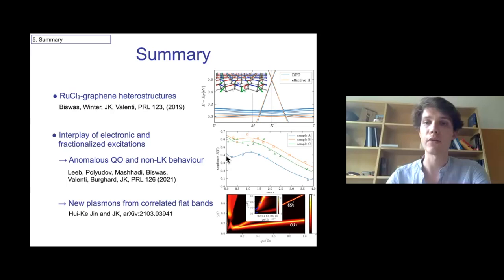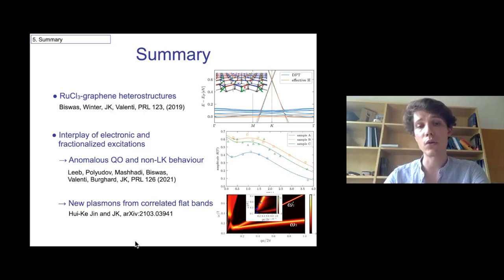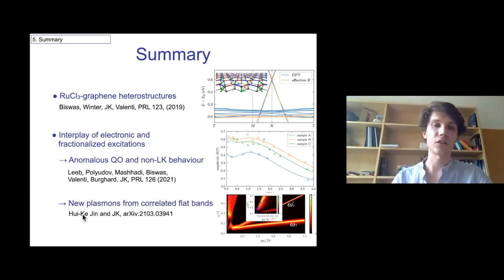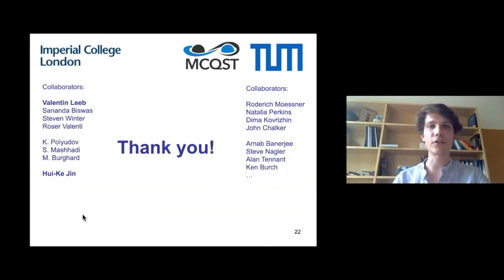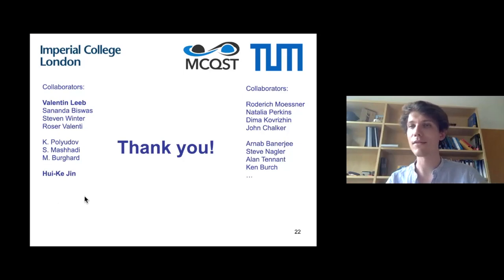In summary, we introduced graphene heterostructures with RuCl₃ and treated an effective heavy Fermi liquid description as a working hypothesis. For quantum oscillations we found non-Lifshitz-Kosevich behavior, and the theory developed is applicable beyond this particular system — whenever you have an almost-flat band hybridized with a broad Dirac band, you get this unusual temperature dependence. We also looked at novel plasmon excitations, consistent with the data but requiring large-q measurements to fully distinguish. Collaborators: Rosa Valenti's group, master student Valentin Leib (analytics for quantum oscillations), and postdoc Jia-Min Ye (plasmon calculations).